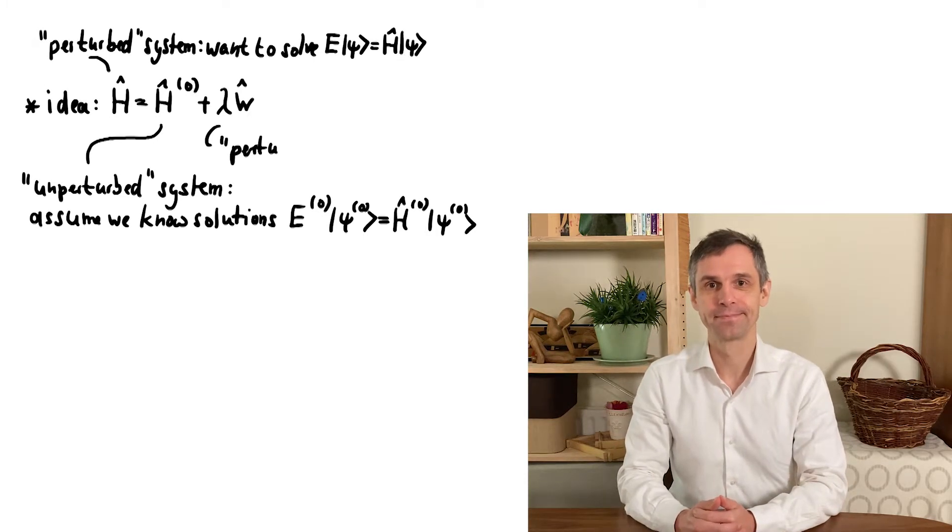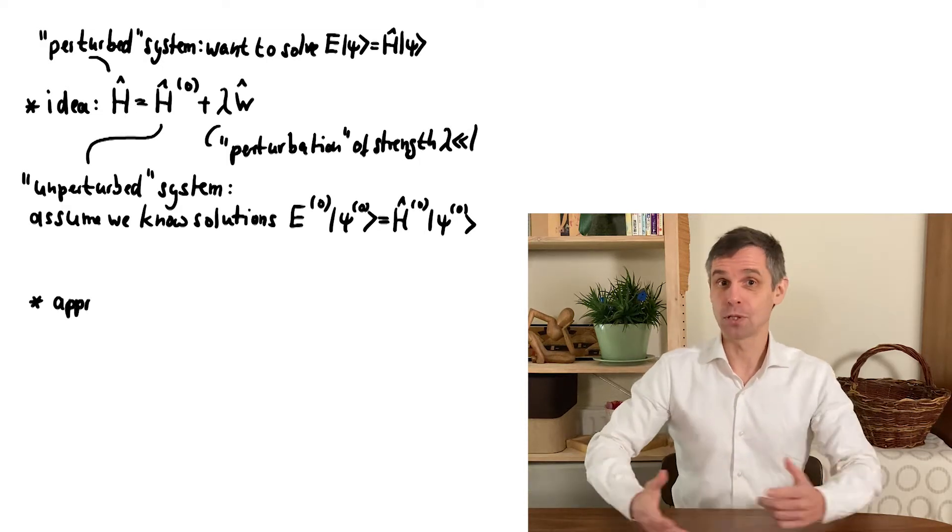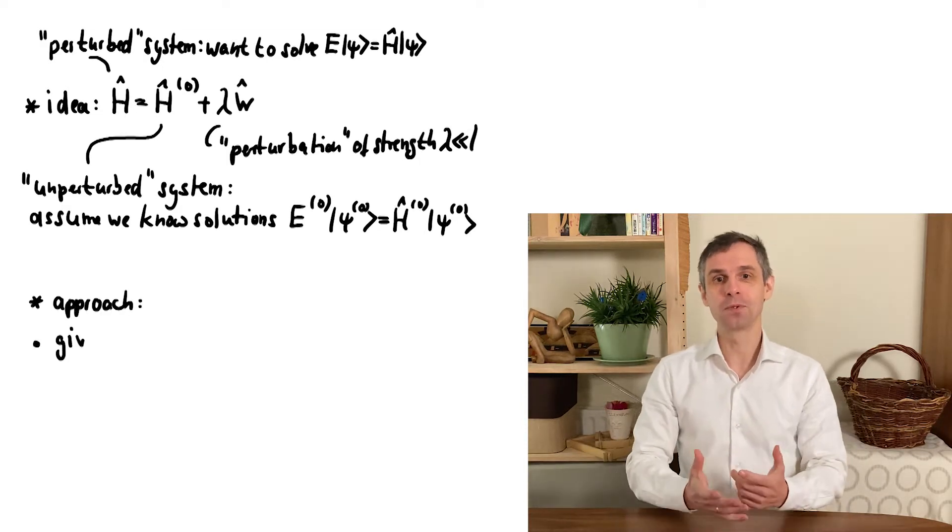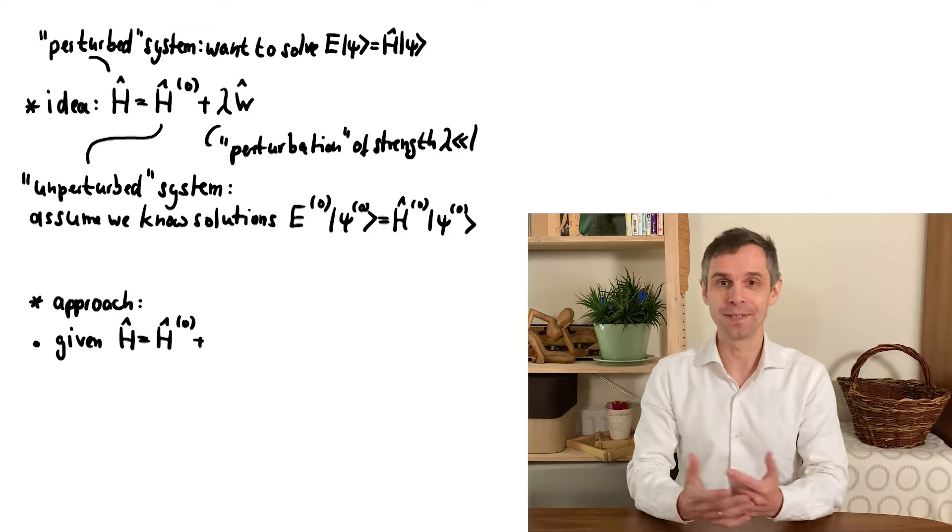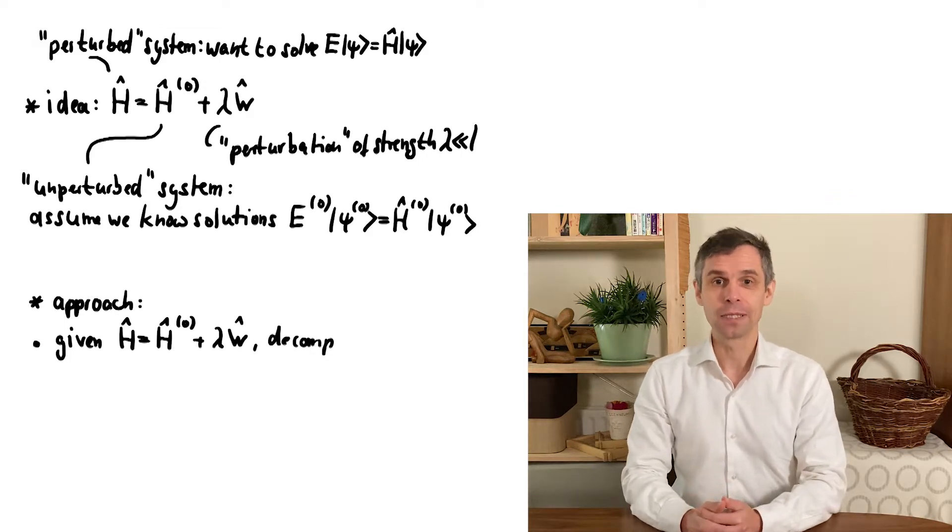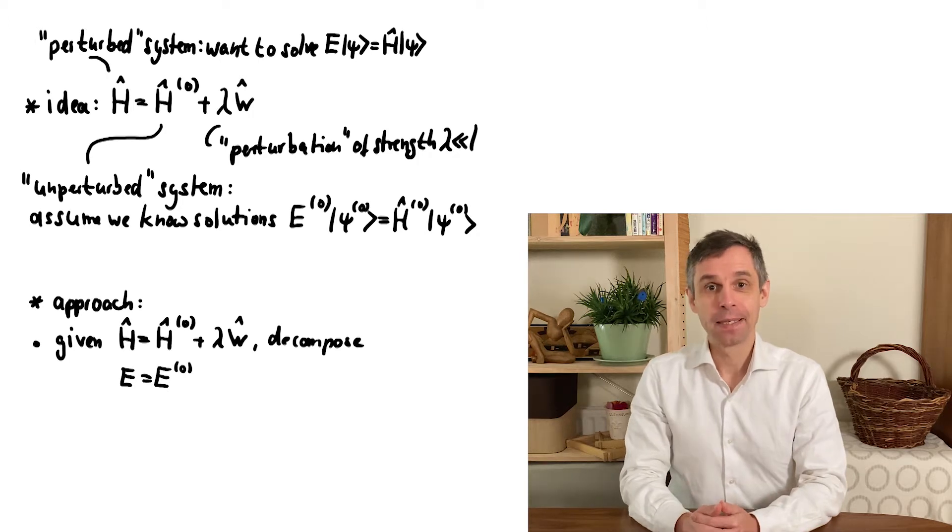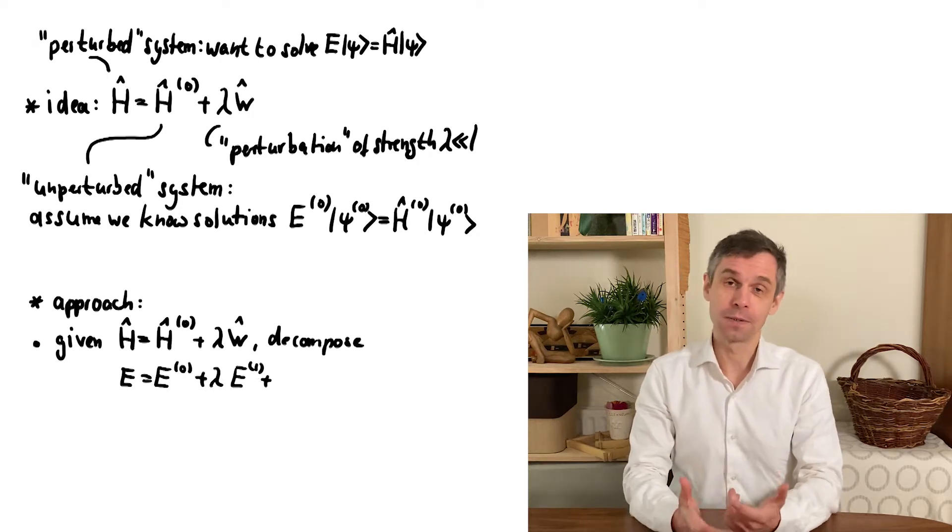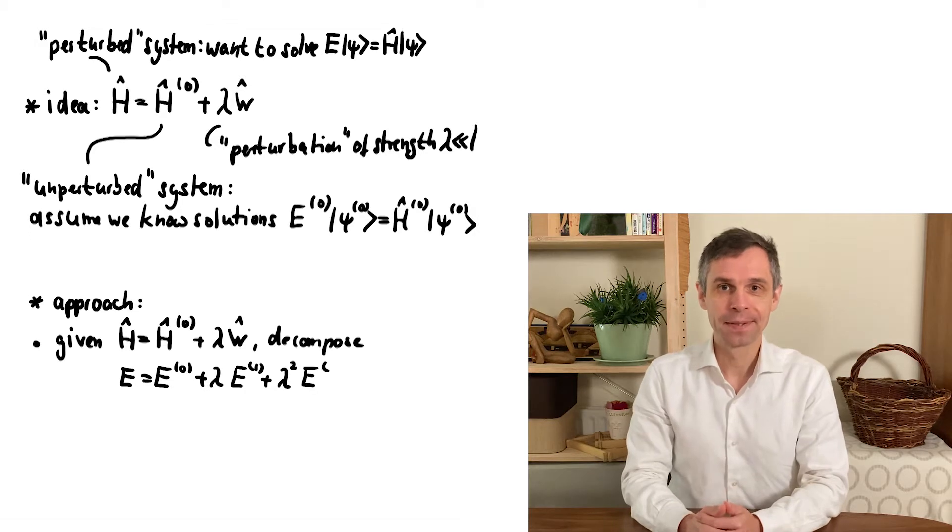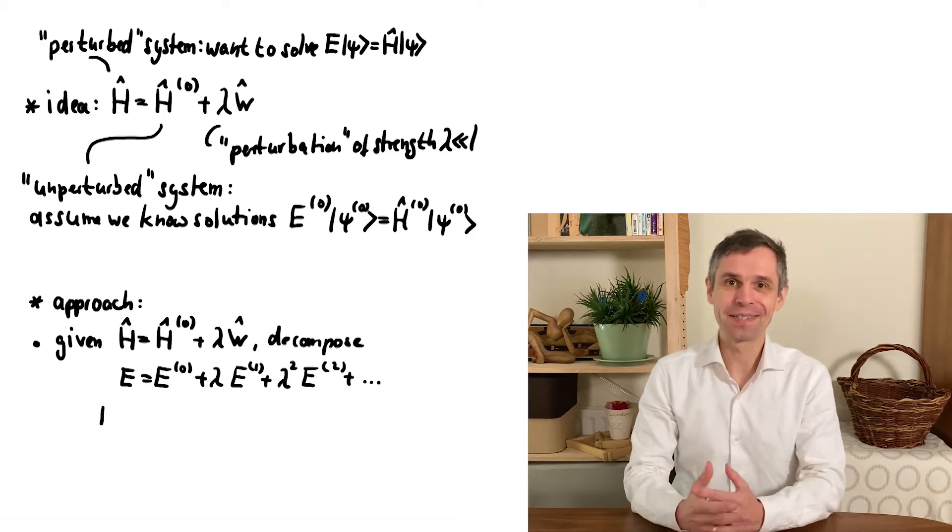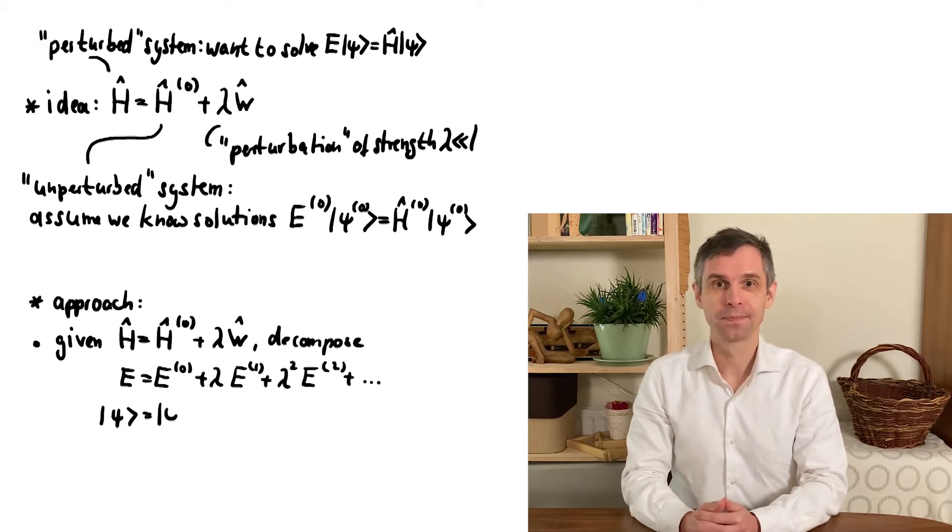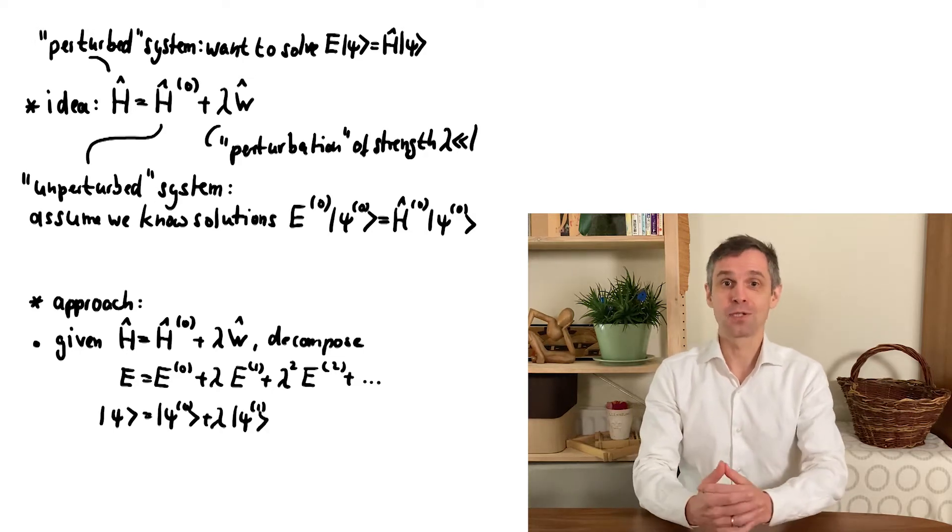To obtain the approximate solutions, we similarly decompose them into terms representing different orders of lambda. So we expand this as a series in powers of lambda. Depending where we truncate here, we will get approximations of different accuracy. This will of course also depend on whether this series here converges.